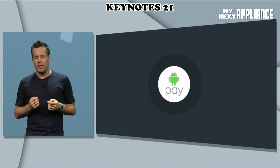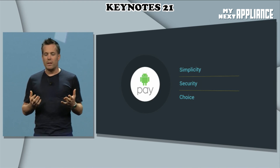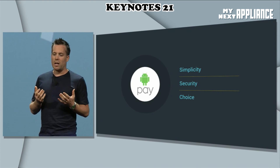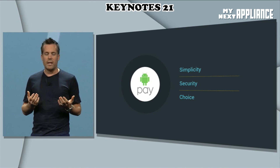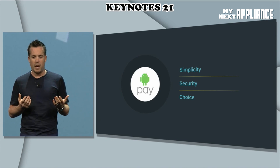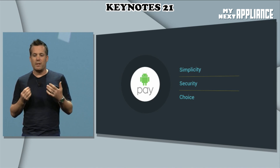With Android Pay, users can simply and safely use their Android phone to pay in stores. All you have to do is unlock your phone like normal, place it in front of the NFC terminal to pay, and there's no need to open any app. Your actual card number is not shared with the store during the transaction. People will be able to choose the most convenient way to activate Android Pay, either through our app or through any supported banking app.